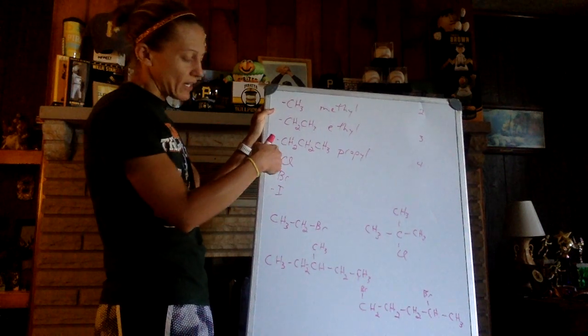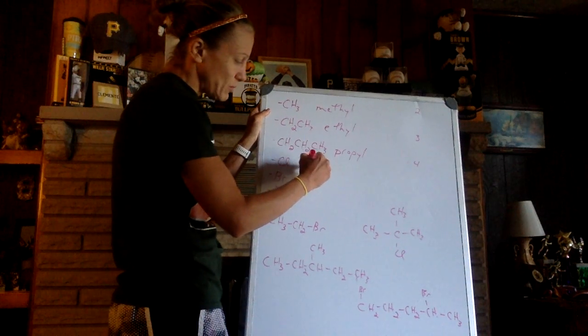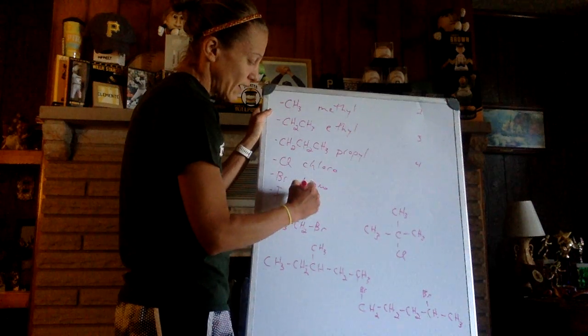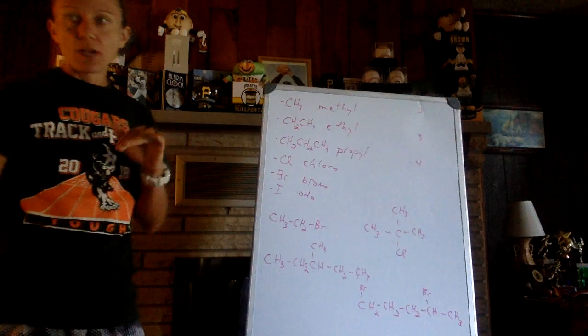These are three halogens: chlorine, bromine, iodine, and we call them chloro, bromo, and iodo when they're used as side chains. Not too bad.